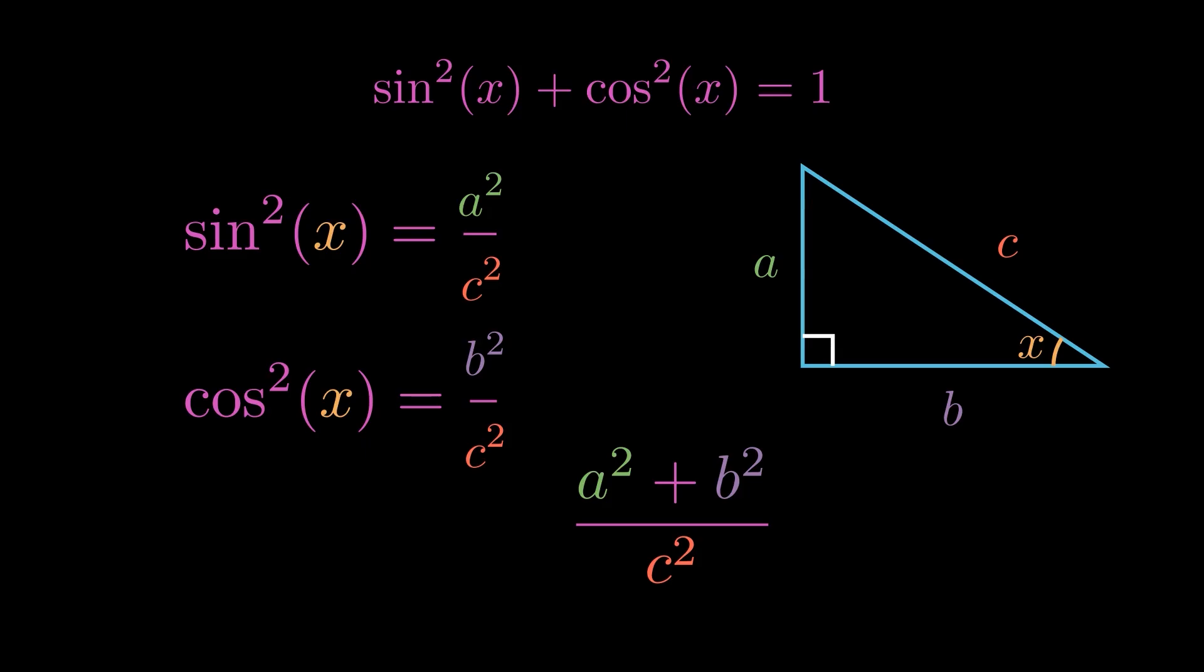Okay, but then what? Well, notice the numerator. Have you seen this expression before? Well, what if I write up the Pythagorean theorem? It states that A squared plus B squared equals C squared. So actually, what we have is C squared over C squared. And of course, we end up with one.